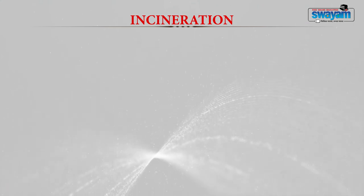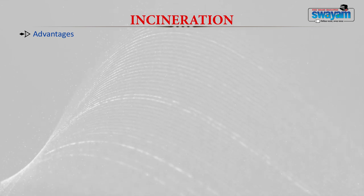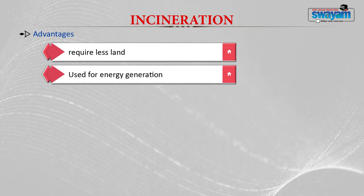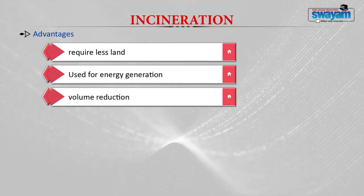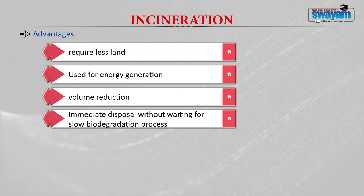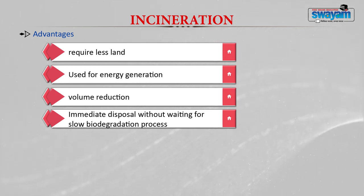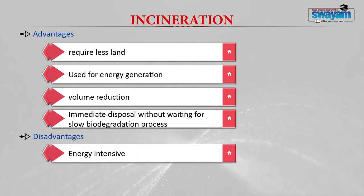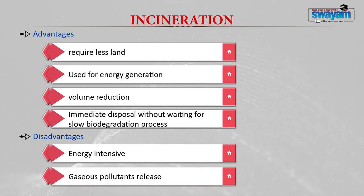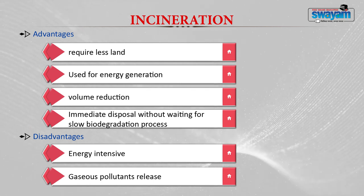Incineration is associated with many advantages and disadvantages. Advantages include requiring very less area, being used for energy generation, reducing the volume of waste by 90 percent and mass by 75 percent, and allowing immediate disposal without waiting for slow biodegradation. Disadvantages include being very energy intensive due to high temperatures. Gaseous pollutants like carbon dioxide, carbon monoxide, oxides of sulfur, and oxides of nitrogen are harmful when released into the atmosphere. To avoid air pollution, air pollution control devices can be used. Fly ash is also generated and can be controlled using particulate matter control devices like electrostatic precipitators and cyclone separators.